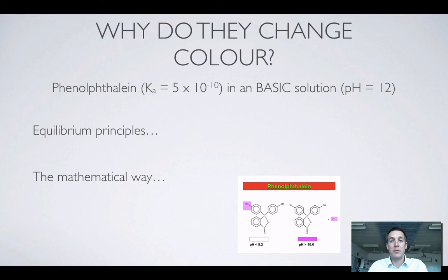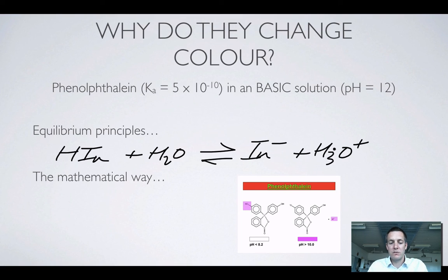Now let's have a look at the same indicator but in a basic solution, pH 12. Again equilibrium principles can be used to explain this color change. We've got HIn which is the colorless form reacting with H2O and producing In- which is the purple form of phenolphthalein and H3O+. Now that we're in a basic solution the concentration of these is going to be very low, so the chances of these two colliding is going to be reduced. The rate of the backward reaction is going to fall in relation to the rate of the forward reaction, and so we're going to produce a lot of In- compared to the amount of HIn that we're forming. In other words it's gonna appear purple because this equilibrium will be shifted to the right-hand side.